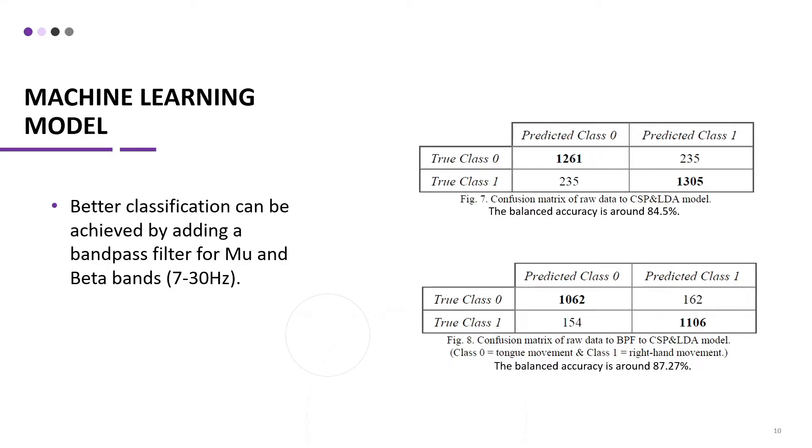These results shown in front of you are the resulted evaluation accuracy. First, common spatial pattern or CSP is used for feature detection and extraction. Then, the results are then passed into an LDA model or linear discriminant analysis model to perform classification. Passing the results of a single subject resulted in an 84.5% accuracy, which is compared to state-of-the-art results very good.